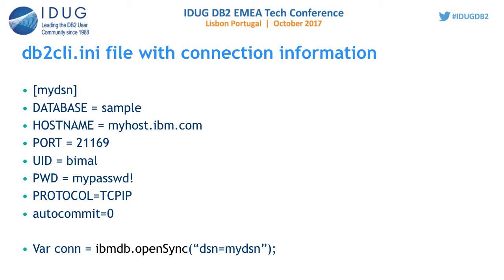Here is sample content of a DB2CLI.INI file where we have defined a section called myDSN and under it we have defined all the connection-related keywords. In the connection string we can then directly use DSN=myDSN. The OpenSync API will return a connection object using which we can run queries against the server.